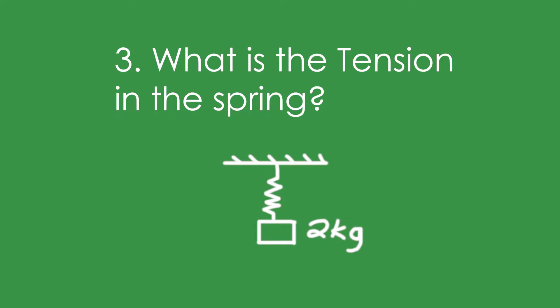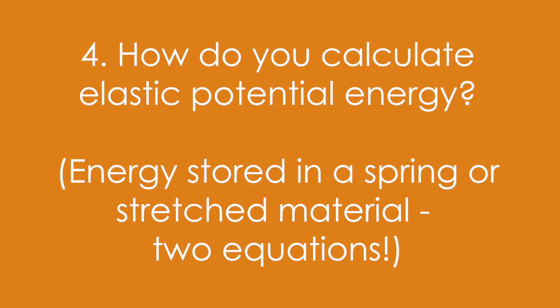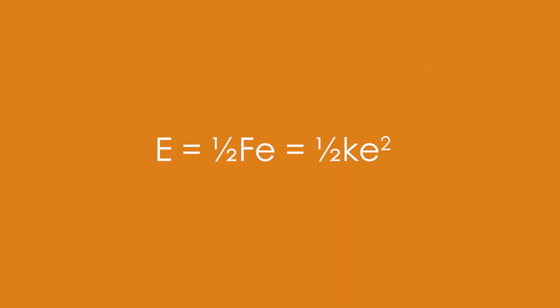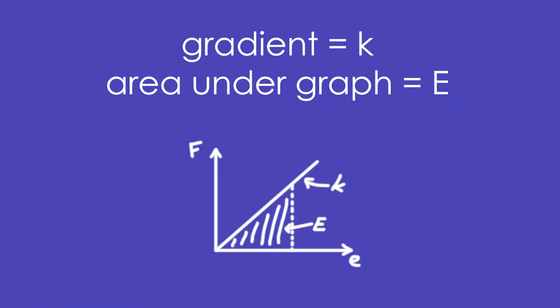Three, what is the tension in this spring? It's 19.6 Newtons because it's 2 kilograms times 9.8 to find the weight. We're assuming it's in equilibrium. Four, how do you calculate elastic potential energy? There are two equations. E is equal to half FE. And if we substitute KE instead of F, we end up with half KE squared. Five, what two things can you calculate from this graph? The gradient gives you the spring constant and the area under the graph gives you the energy stored.